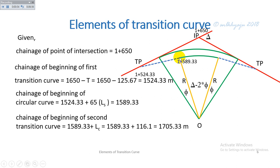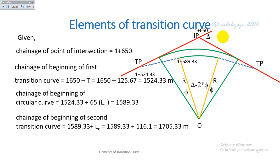Similarly, the chainage of the beginning of the second transition curve, which is the end of the circular curve, is given as the chainage of the beginning of the circular curve plus the length of the circular curve, calculated as approximately 1705.43 meters.